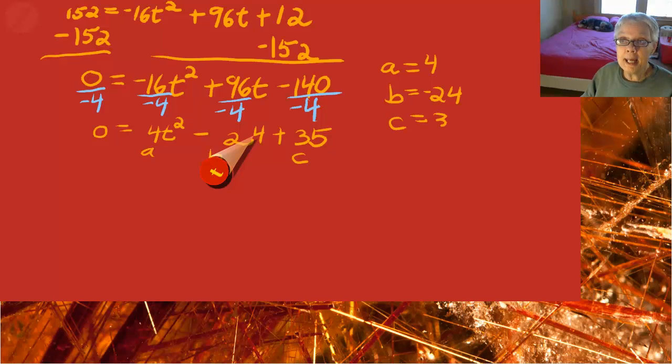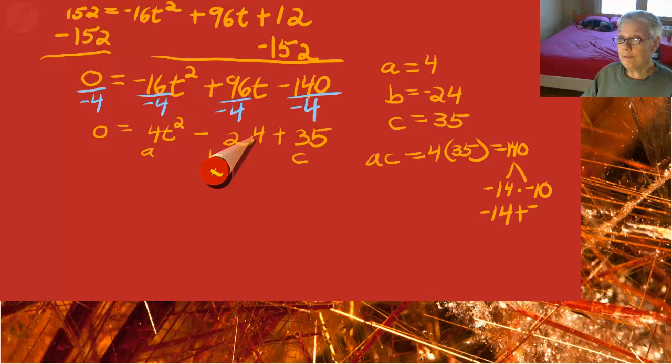So let's multiply a times c. A times c is 4 times 35, which is going to be 140. And 140 happens to break down into negative 14 times negative 10. But those are the numbers we need because negative 14 plus negative 10 equals our b number, which is negative 24.